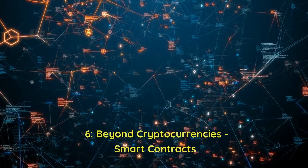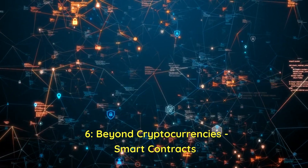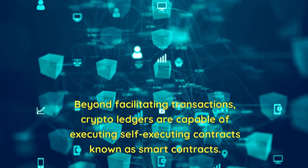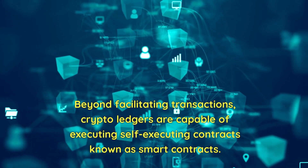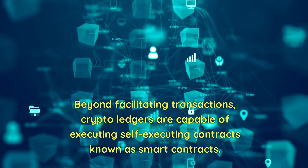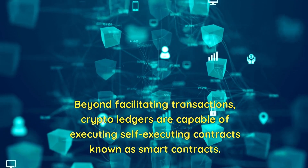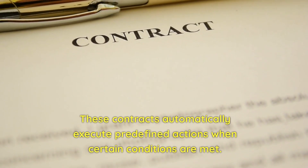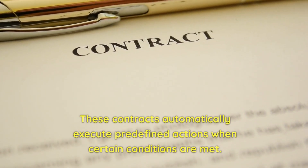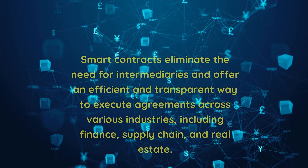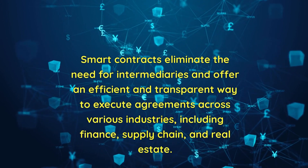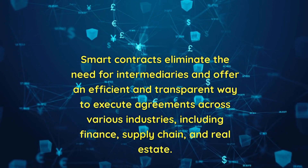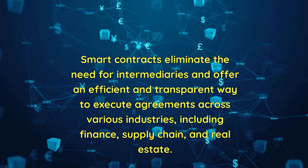Six: beyond cryptocurrencies — smart contracts. Beyond facilitating transactions, crypto ledgers are capable of executing self-executing contracts known as smart contracts. These contracts automatically execute predefined actions when certain conditions are met. Smart contracts eliminate the need for intermediaries and offer an efficient and transparent way to execute agreements across various industries, including finance, supply chain, and real estate.